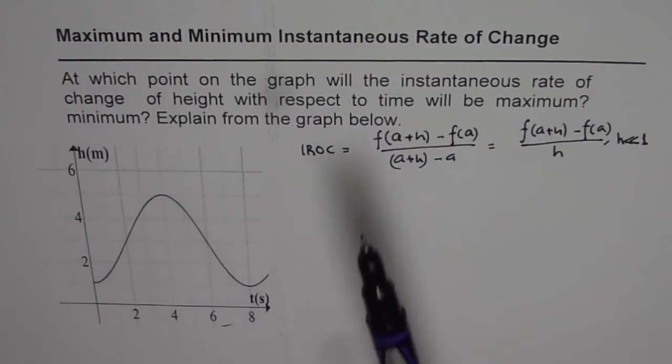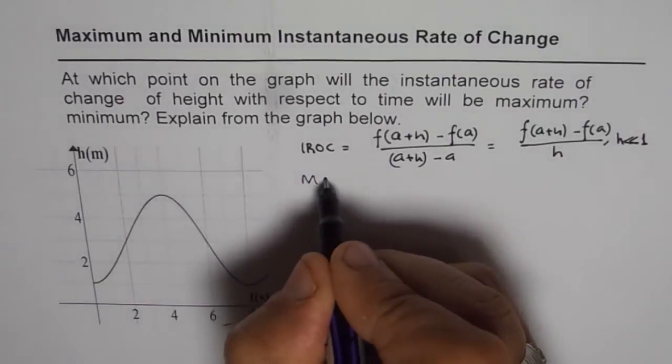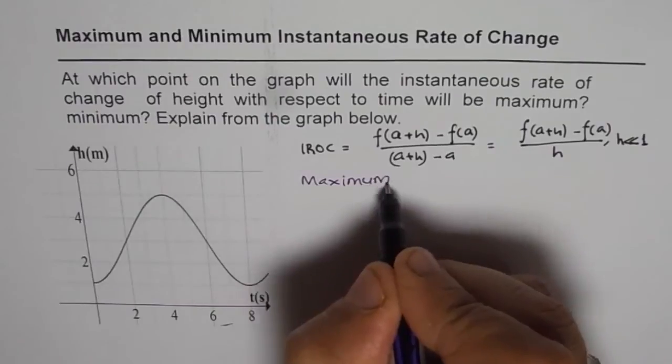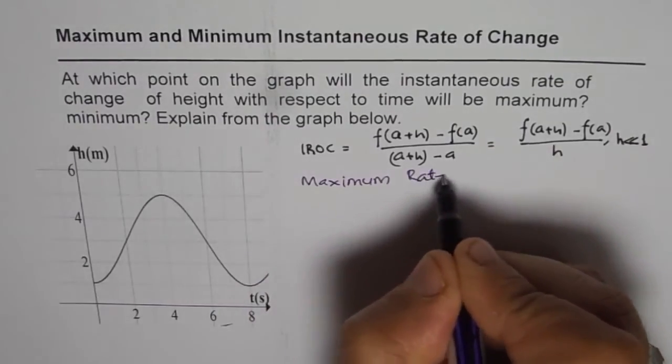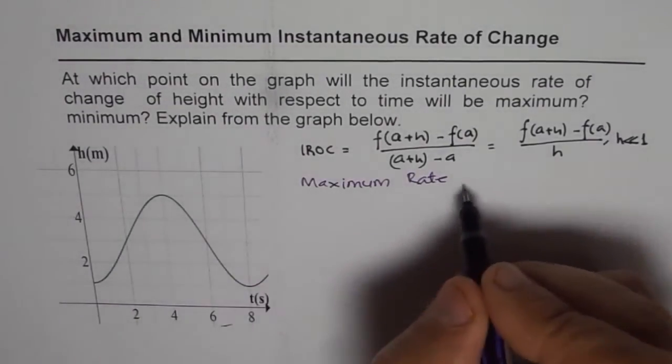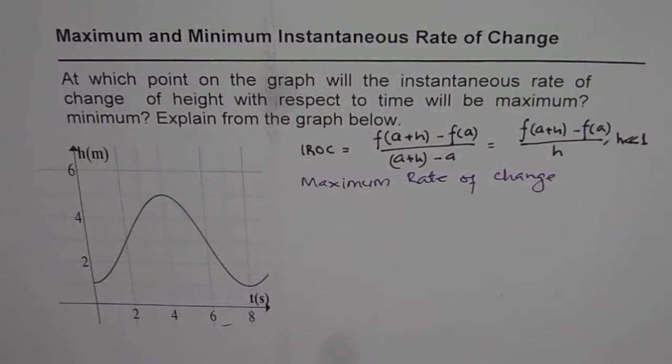Now, we need to figure out that in the given graph, which is that point which can give you maximum rate of change, right? So we have to look for a maximum rate of change and minimum. And we have to give a logic for that. That is what this question is. Now let's analyze the given graph.